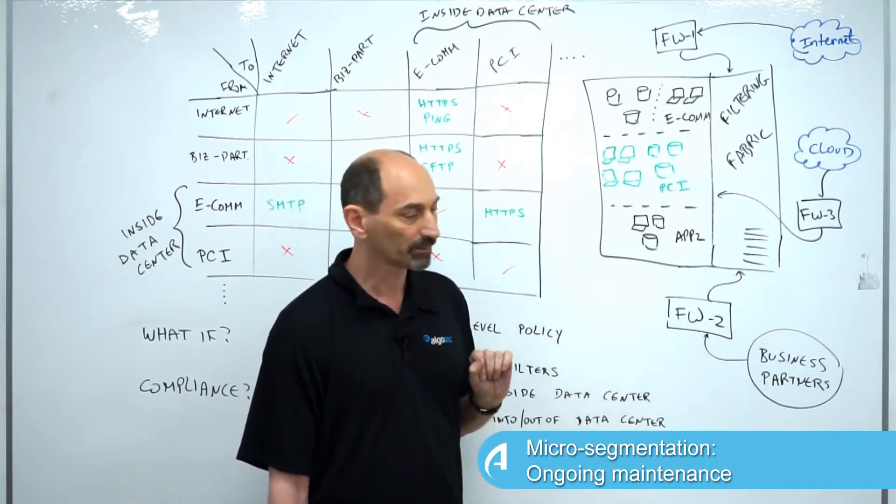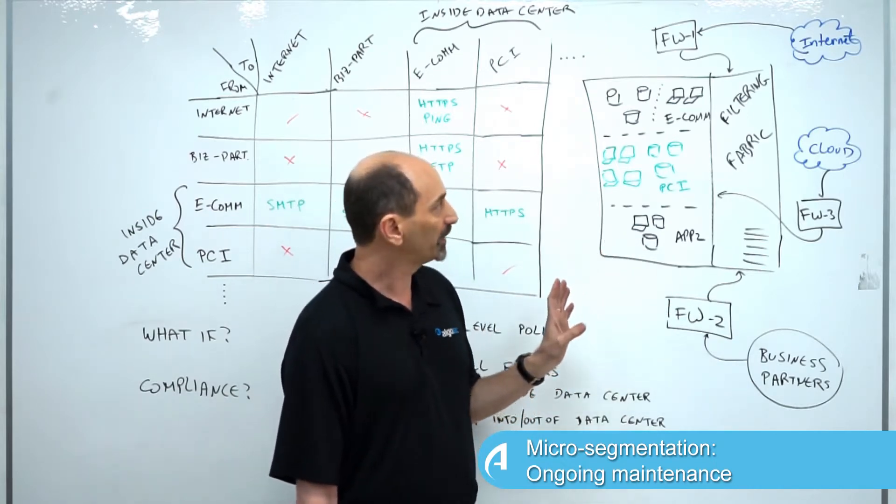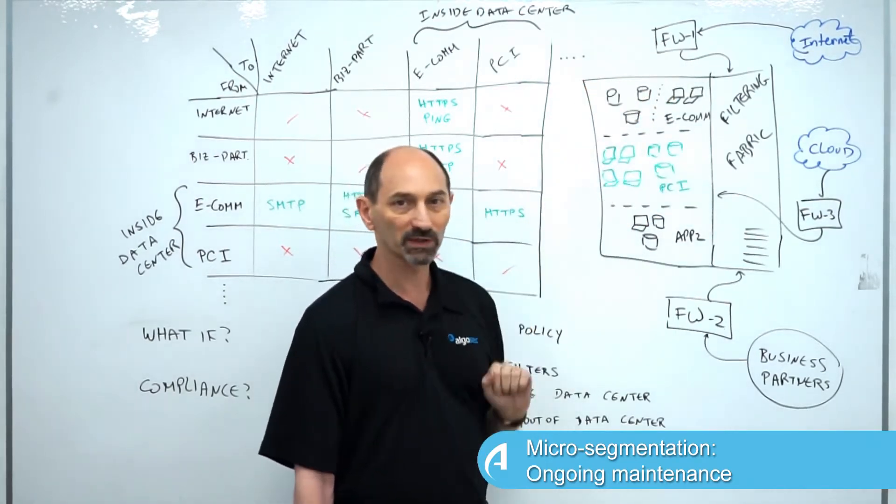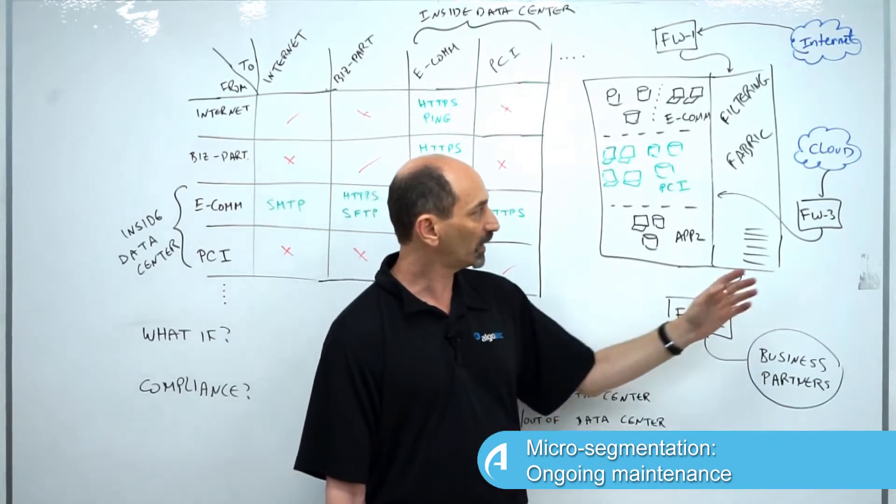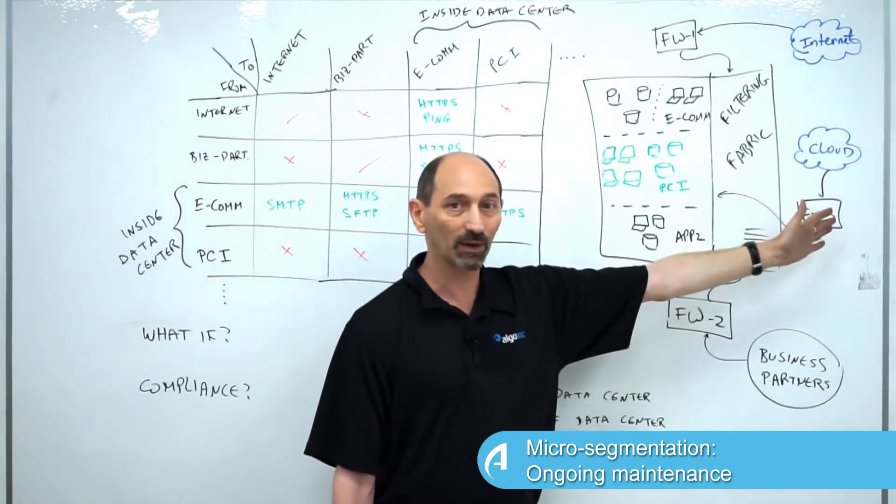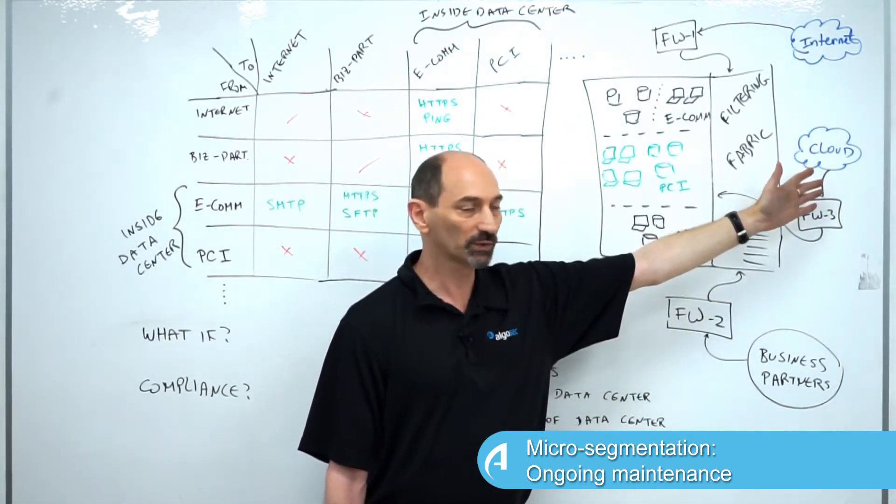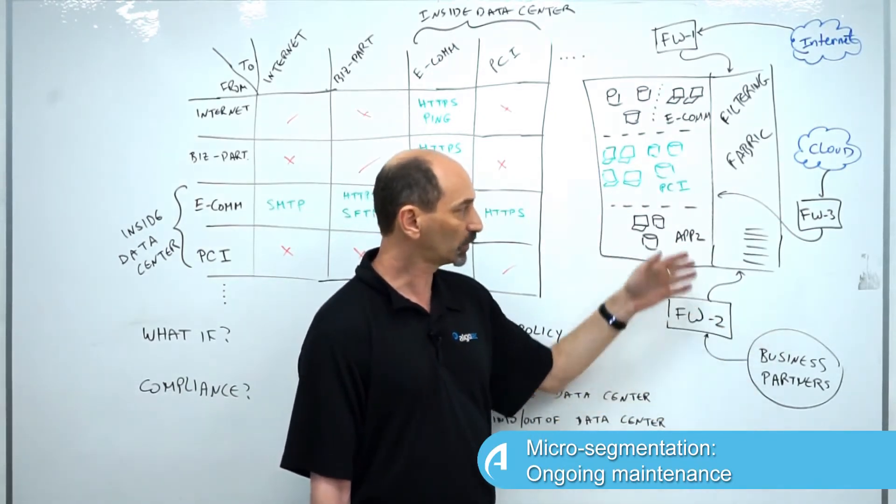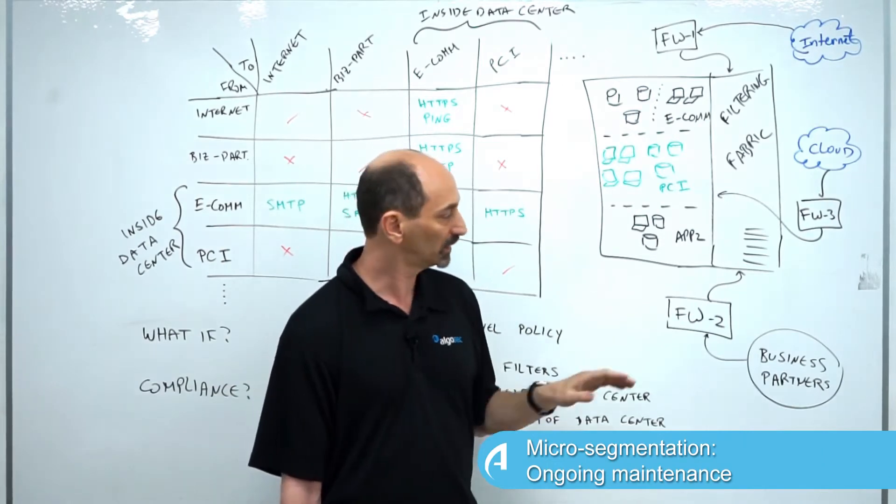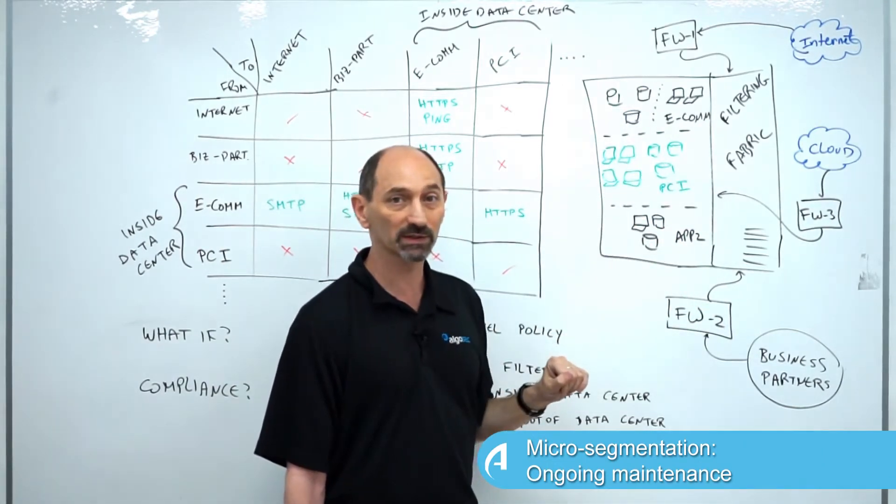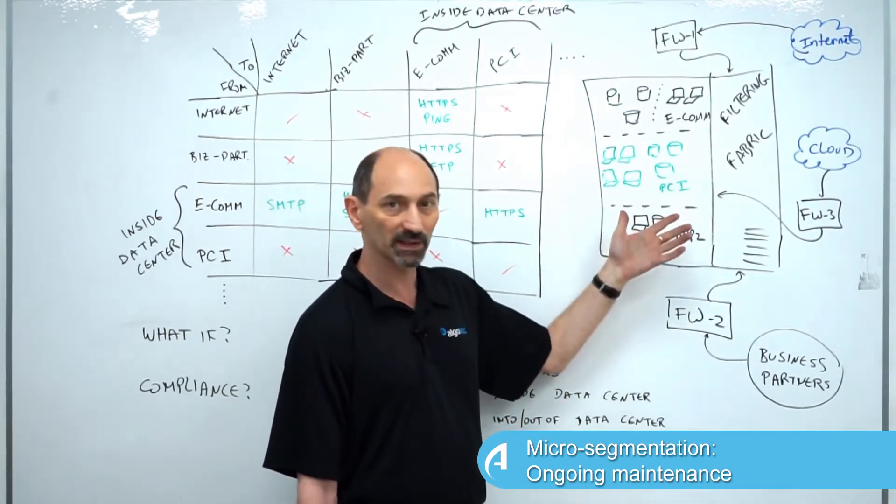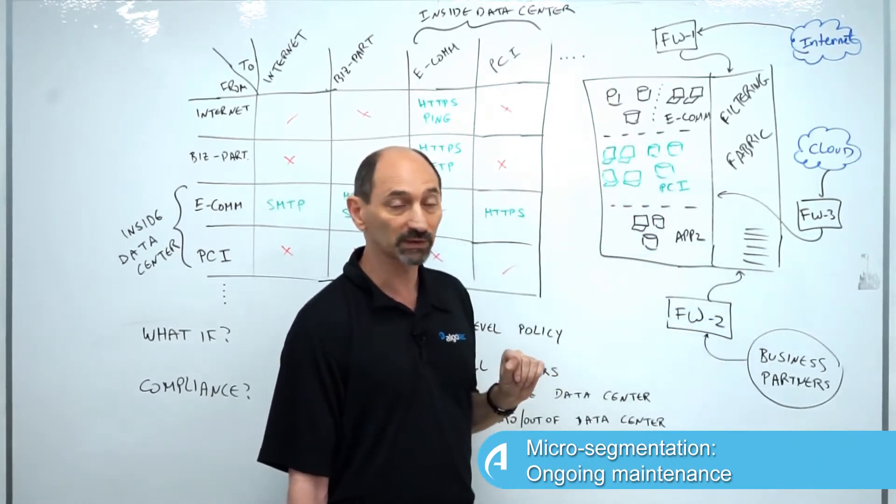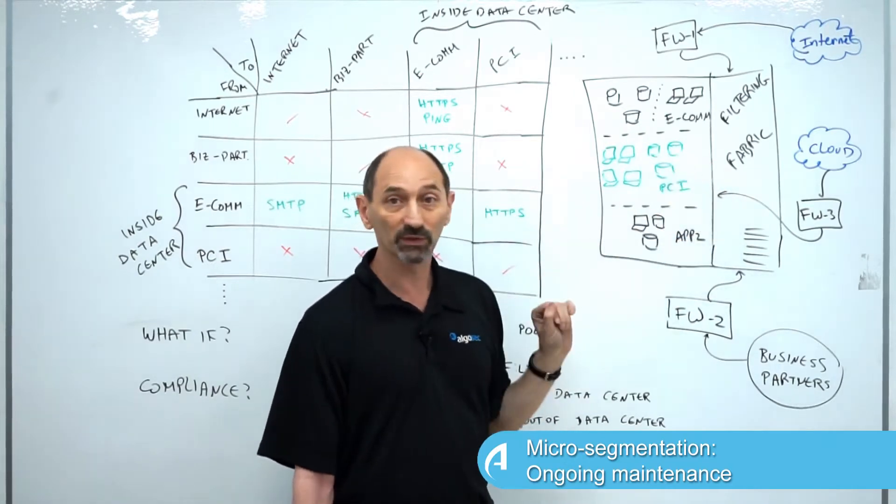It's connected. Maybe we have internet connections coming in reaching various parts of the data center. Maybe we have parts of our state in the cloud and connections to and from the cloud are entering the data center. Maybe we have business partners that connect to various parts of our data center. All of these external connections come into the data center through firewalls.